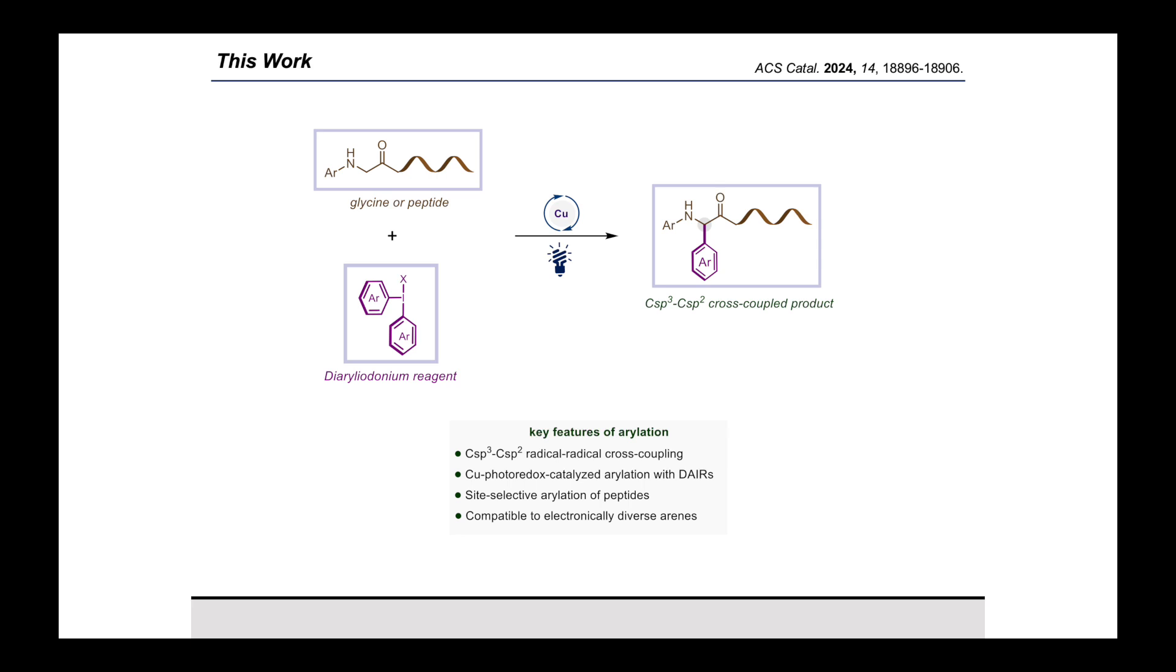By overcoming all these challenges, we developed a protocol where a diaryl iodonium reagent was taken as the aryl radical precursor as it is cheap, easily accessible, bench stable, and easy to handle in copper-catalyzed photoredox condition for the formation of Csp3-Csp2 cross-coupled product. By this method, we have fixed the problems related to site-selective arylation of glycine or peptides, which is susceptible to electronically diverse aryls like electron rich, electron deficient, and heteroaryls also.